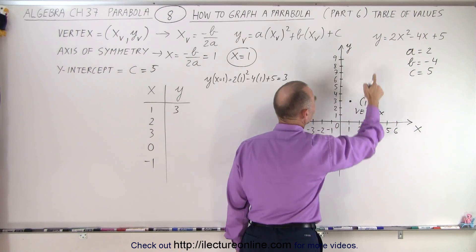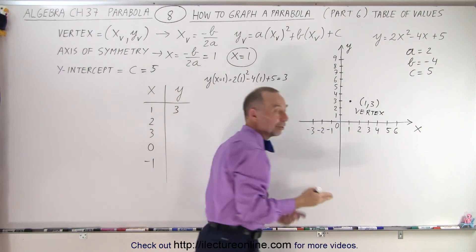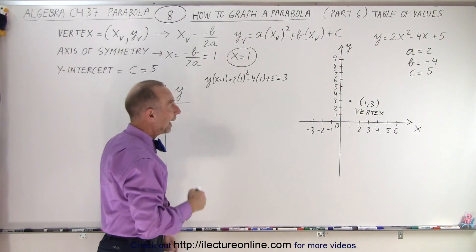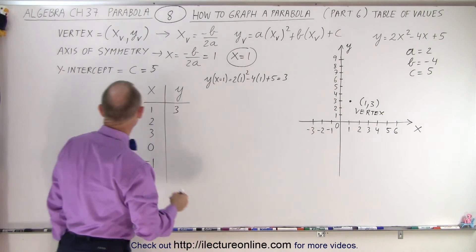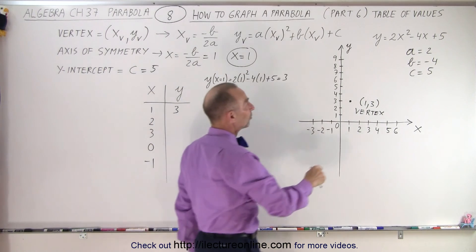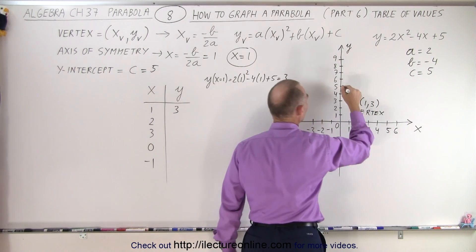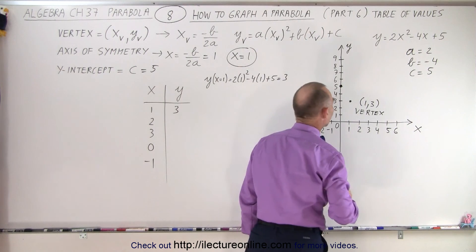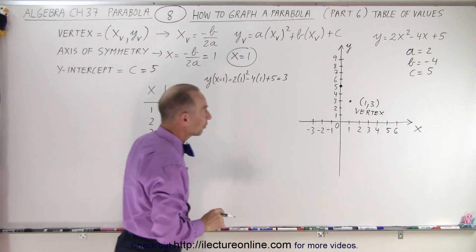We also realize that since a is positive, the parabola will open upward. And we might as well go ahead and realize that the y-intercept is equal to the value of c. c in this case is equal to 5. That means that when x equals 0, y equals 5 is definitely one of the points.